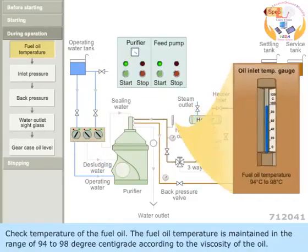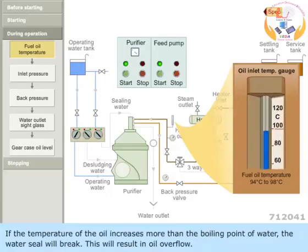Check temperature of the fuel oil. The fuel oil temperature is maintained in the range of 94 to 98 degrees centigrade according to the viscosity of the oil. If the temperature of the oil increases more than the boiling point of water, the water seal will break. This will result in oil overflow.